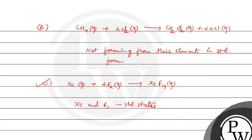We'll also check Option D: 2CO gas plus O₂ gas gives 2CO₂ gas. Here, CO is not in its standard elemental form — CO is a compound, not an element. Therefore this reaction does not satisfy the condition, and it is not the correct answer.